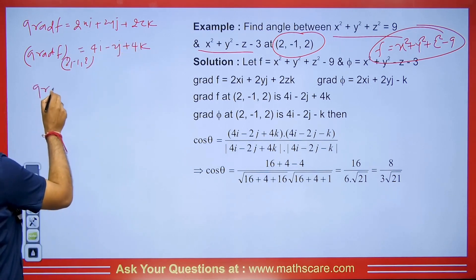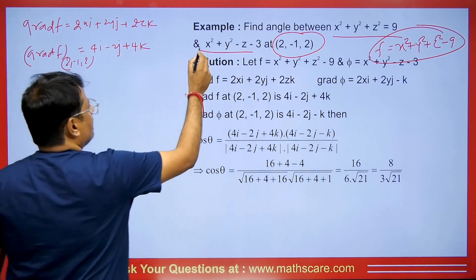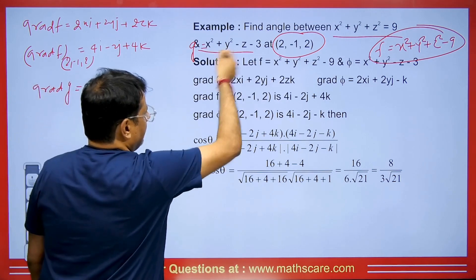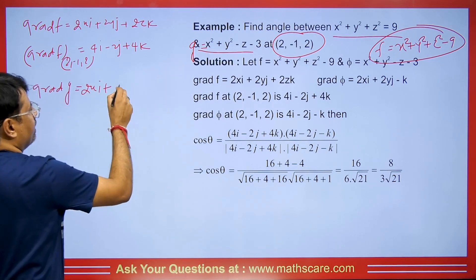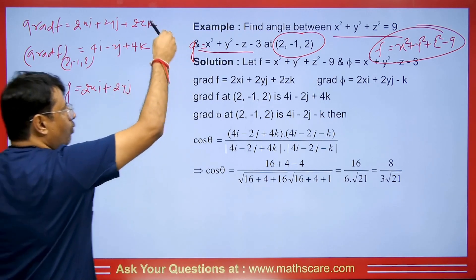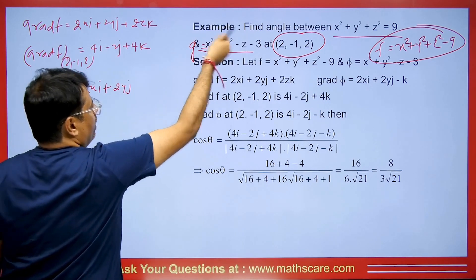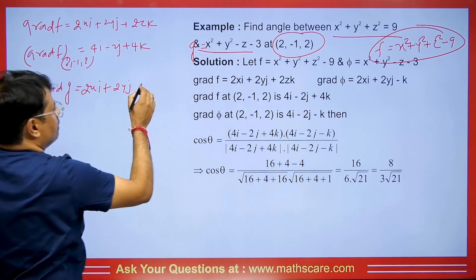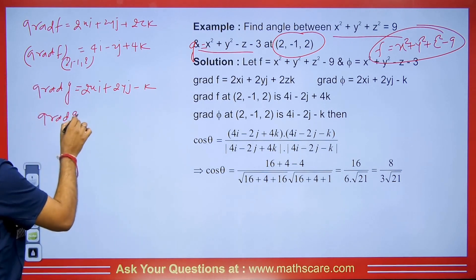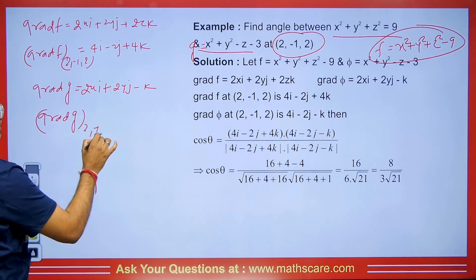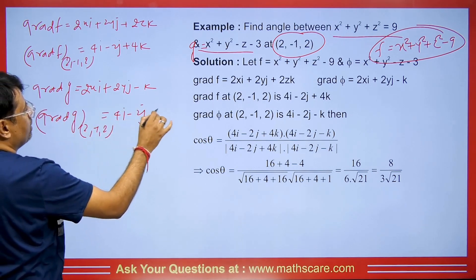Now for the second surface g, we find the gradient of g. Taking the derivative with respect to x gives 2xi, with respect to y gives 2yj, and the derivative with respect to z gives minus 1, so minus k. At the point (2, −1, 2), the gradient of g becomes 4i − 2j − k.